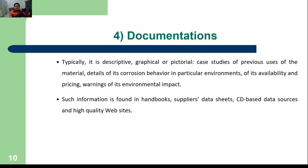Documentation can be graphical, pictorial, case studies of previous users, details of corrosion behavior, environmental impact, availability, pricing, and environmental considerations. For example, even though polypropylene might have lower cost than low carbon steel, if the application is concerned about environmental impact, low carbon steel could be the better choice. Studies have found that polypropylene recycling is limited, and recycled polypropylene can be detrimental to new products.